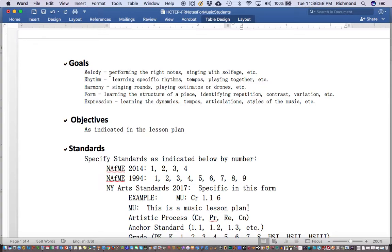Under rhythm, learning specific rhythms, tempos, playing together. If you are learning specific tempos like largo, grave, andante, allegro, prestissimo, and so on, then that vocabulary would make its way into your goals section. For harmony, if you are using terms such as ostinato, ostinatos, rounds, canons, drones, and so on, then that vocabulary would make its way into your goals.